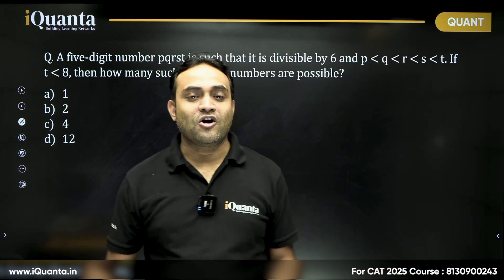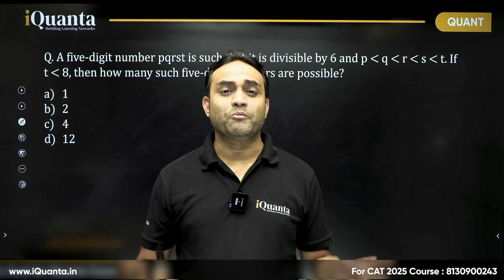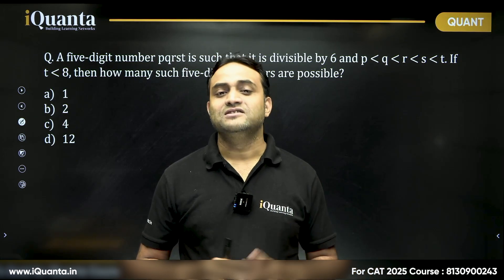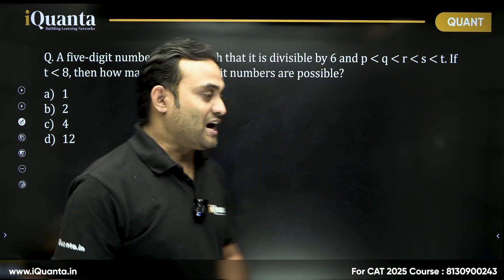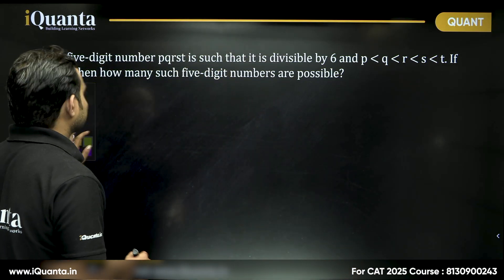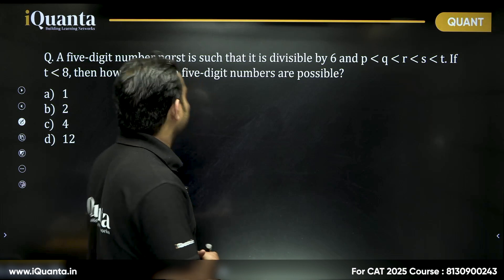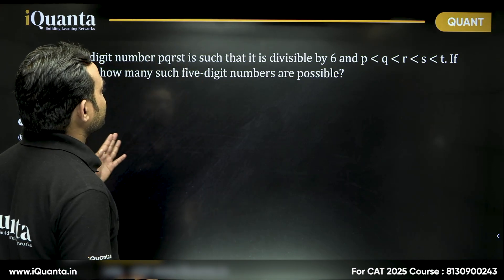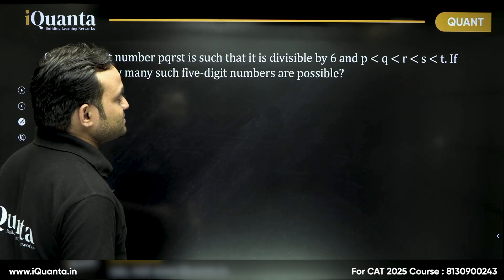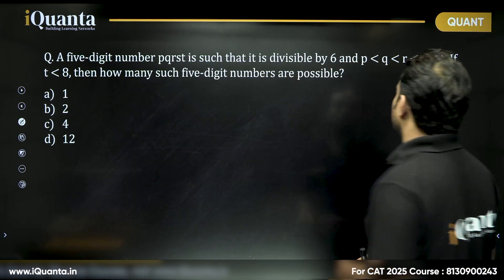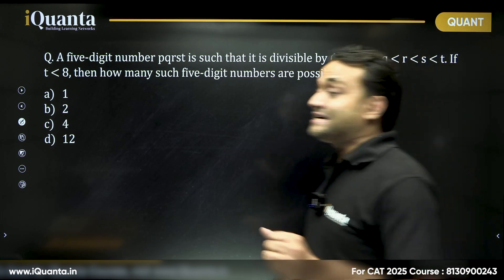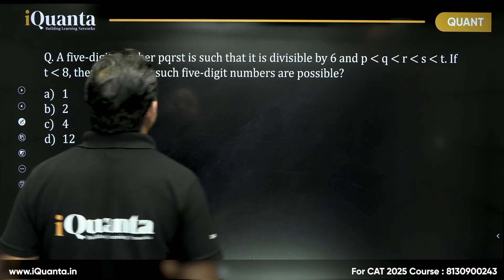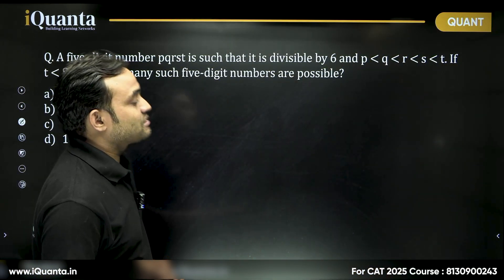Although this is not entirely a permutation and combination problem, this is basically a numbers problem. If you have tried this, then you will know that this question does not have many permutations. A five digit number P, Q, R, S, T is such that it is divisible by 6 and P is less than Q is less than R is less than S is less than T. If T is less than 8, then how many such five digit numbers are possible?